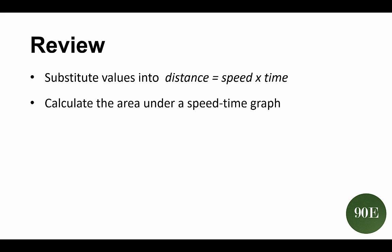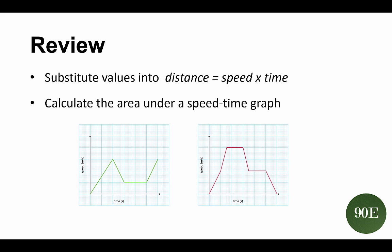So, just to review, if an object is travelling at a constant speed, you can substitute values from the graph and the question into the equation to work out the distance travelled. But, if the speed of the object varies along the journey, you must use the area under the journey line, or the portion of it that you're interested in, to work out the distance that's travelled.